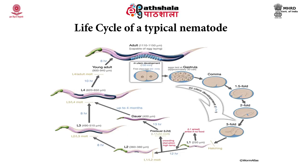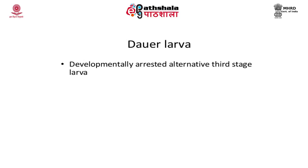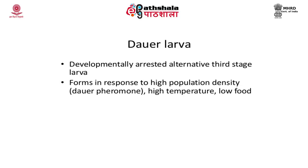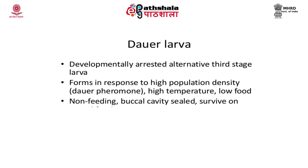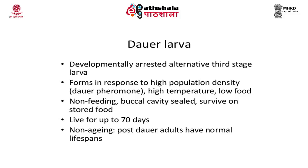The L4 stage otherwise becomes the young adult and the cycle is completed within almost 3 days. The dauer larva is a developmentally arrested alternative third stage larva. It forms in response to high population density, high temperature and low availability of food. It is a non-feeding stage where the buccal cavity is sealed and it survives on stored food. This larva can live for up to 70 days. Post-dauer adults have normal life span and continue in the life cycle.